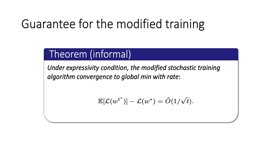With this expressivity condition and the two-phase modification algorithm, we have the following theorem. Informally, admitting some mild assumptions that would actually hold in real neural net training, a real condition that under expressivity condition, and if we use a modified stochastic training algorithm, then the algorithm would converge to global optimal with a rate of 1 over square root of t.